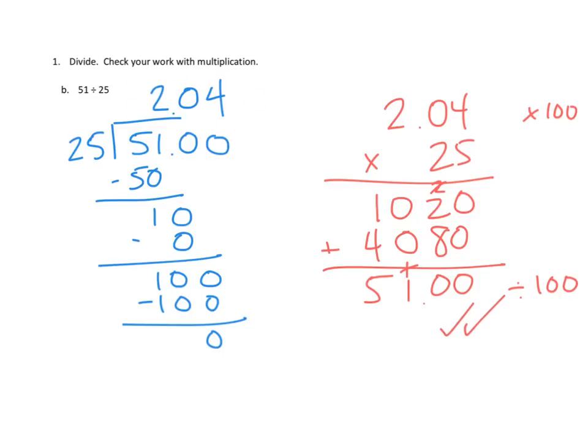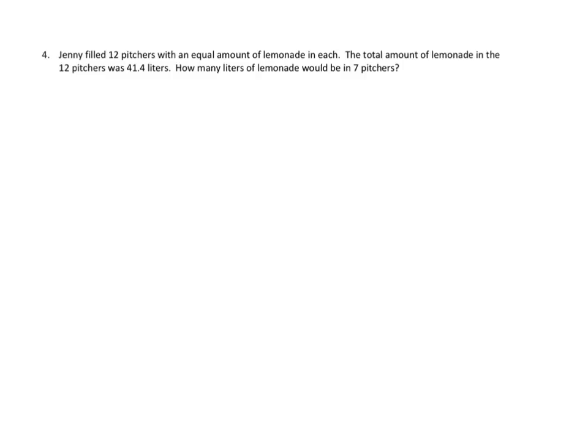And if we had 5,100 at this point, and we divided by a hundred, we would move our place value one, two spots, to right here. And sure enough, then, 51 and 51 we've checked out. So, I'm going to write my double check. And I've done my division properly. And I know that my quotient is, in fact, two and four hundredths. Let's take a look at one more problem from tonight's homework. And this one is a word problem. So, we're going to use our read, draw, and write strategy.